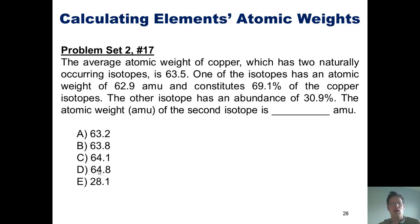And here's another problem that's very similar, though slightly different. The average atomic weight of copper, which has two naturally occurring isotopes, is 63.5.